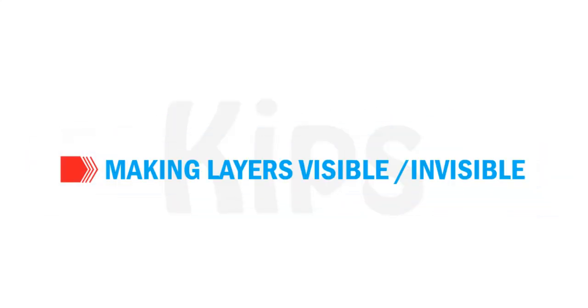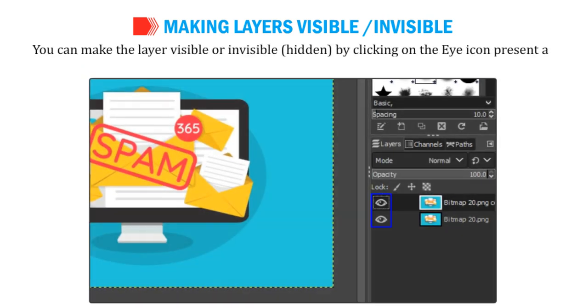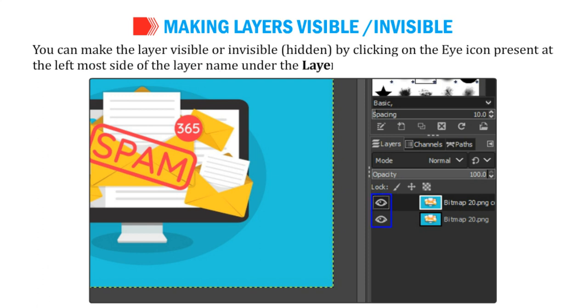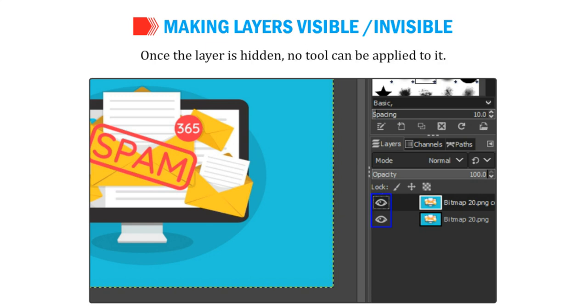Let us learn about making layers visible or invisible. You can make the layer visible or invisible by clicking on the eye icon present at the left-most side of the layer name under the Layers tab. Once the layer is hidden, no tool can be applied to it.